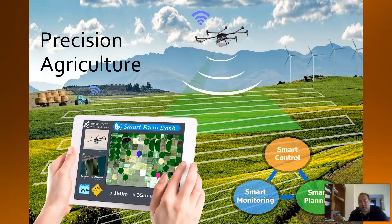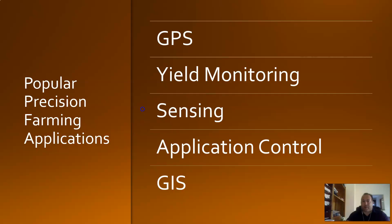With precision agriculture, what do we mean by that terminology? It's the idea of incorporating technology into farming and using different tools to make farming more efficient — something important we've talked about throughout the semester. Popular precision farming applications include the use of GPS, yield monitoring, sensing — usually remote sensing — the idea of bringing in satellites or aerial imagery to help figure out any issues, some sort of application control, and the use of a GIS system.